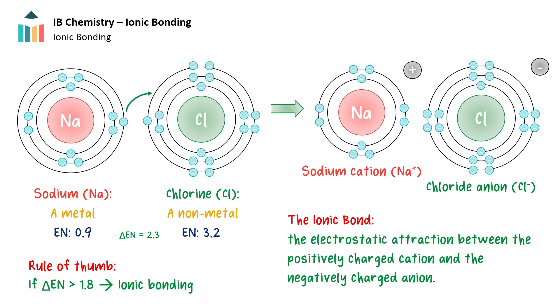As a result of this complete transfer of electrons, a cation and an anion form. The ionic bond is the electrostatic attraction between the positively charged cation and the negatively charged anion.